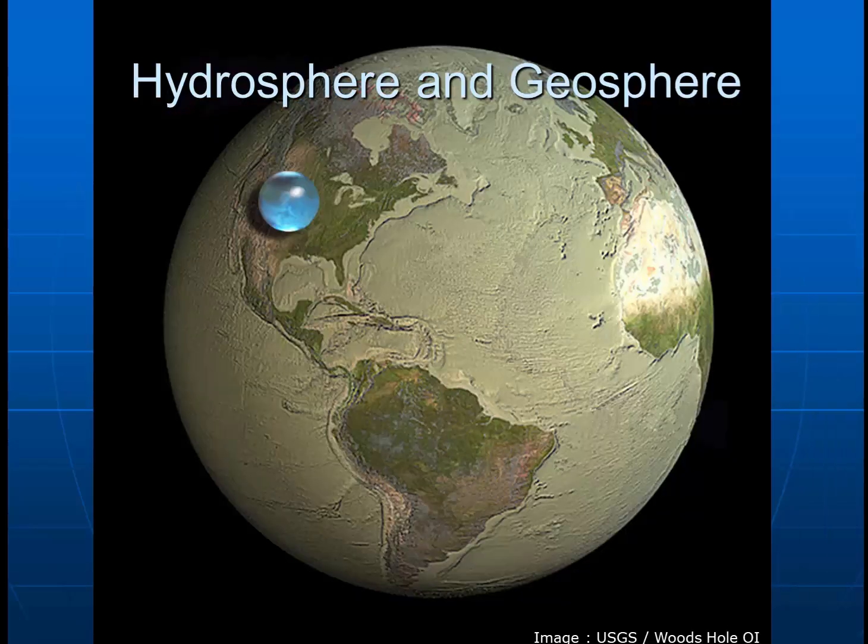Scientists at the United States Geological Survey and Woods Hole Oceanographic Institute combined together to provide a diagram that compares the hydrosphere and geosphere. You'll notice that by volume, the geosphere is much, much larger than all the water on planet Earth. From this, we can understand that the oceans, although they may be vast in surface area, are very thin in terms of the overall structure of the Earth.